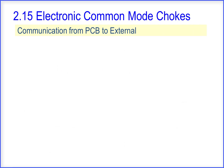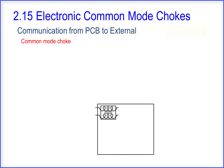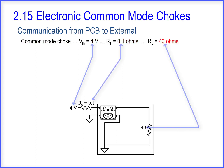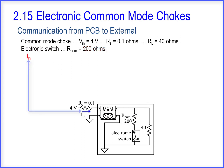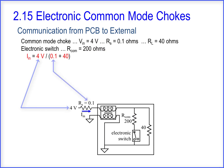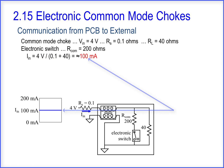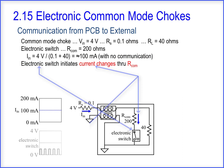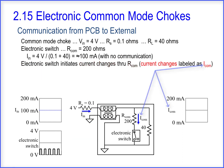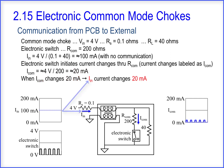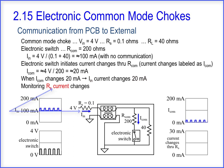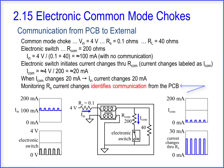Moving on to a power rail communication from a PCB to an external device: a common mode choke is placed on a PCB with an input voltage of 4 volts, an RS resistor of 0.1 ohms, and an RL resistor of 40 ohms. An electronic switch is placed on the PCB with an RCOM resistor value of 200 ohms. The input current equals 4 volts divided by 0.1 ohms plus 40 ohms, approximately 100 milliamps. The electronic switch initiates current changes through RCOM, labeled ICOM, which equals approximately 4 volts divided by 200 ohms, or about 20 milliamps. These ICOM 20 milliamp current changes result in 20 milliamp changes in input current. Monitoring the RS resistor current changes identifies communication from the PCB.